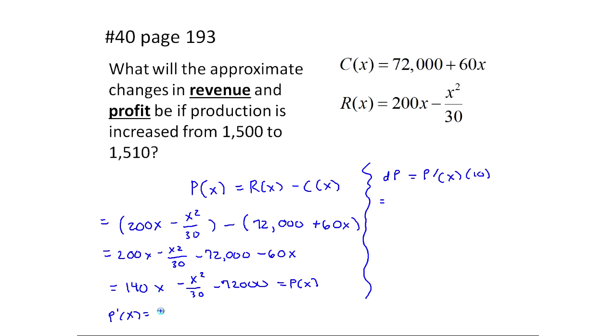So P prime of x, that's going to be 140x prime. When you have a number times x, the derivative is just the number, so it's just 140. Minus, now remember this is x squared times minus 1 over 30, so that will be 2x times 1 over 30. I know we can simplify that, and we will in a minute, and then minus 72,000 is just a constant, so its derivative is 0. So our P prime ends up being 140, 2 times 1 over 30 is 1 over 15, so it will be minus x over 15. I'm going to plug that in up here now. So I end up with 140 minus x over 15 times 10.